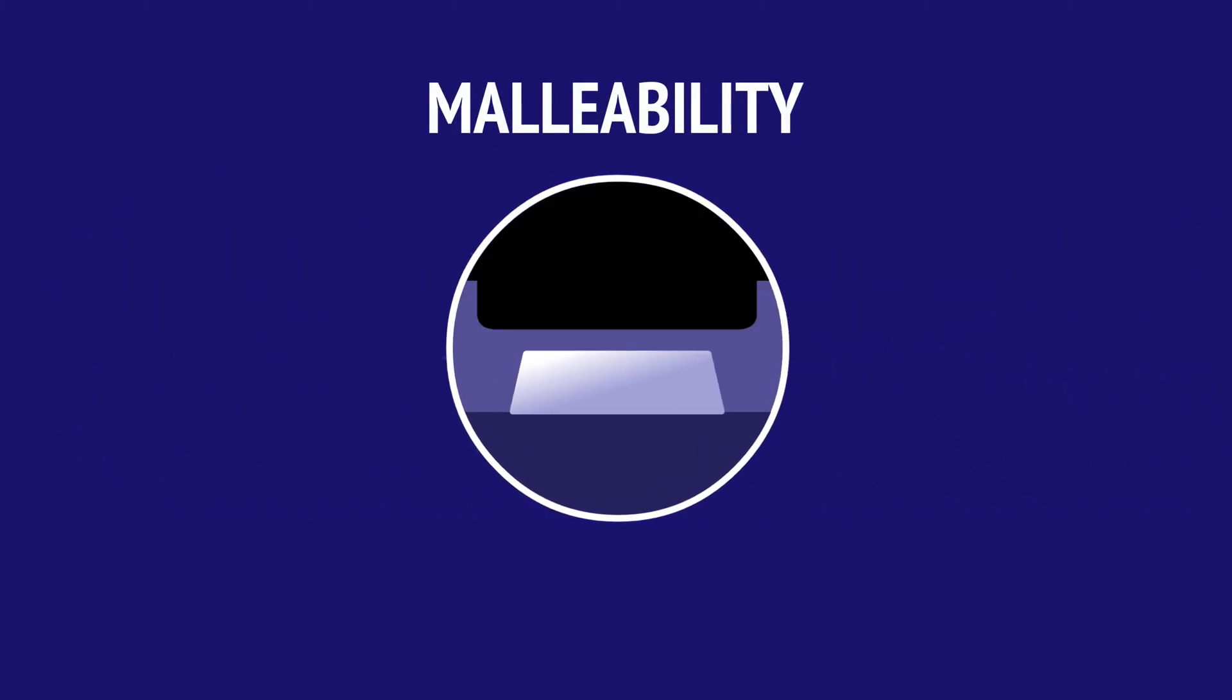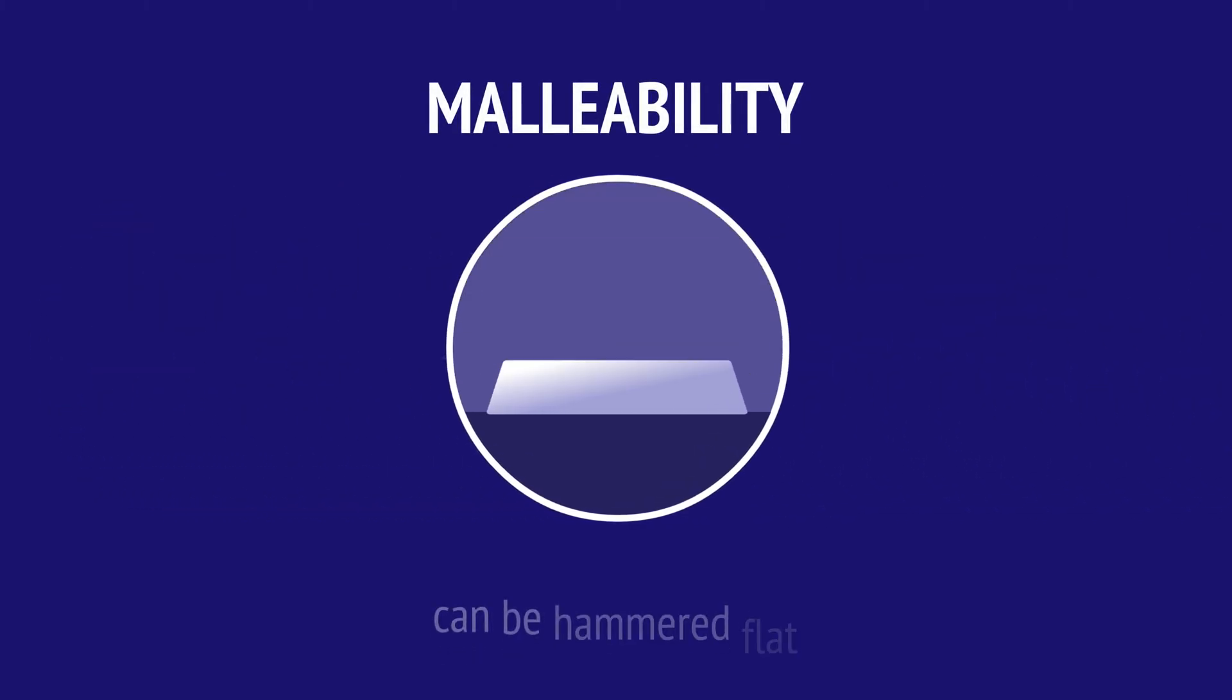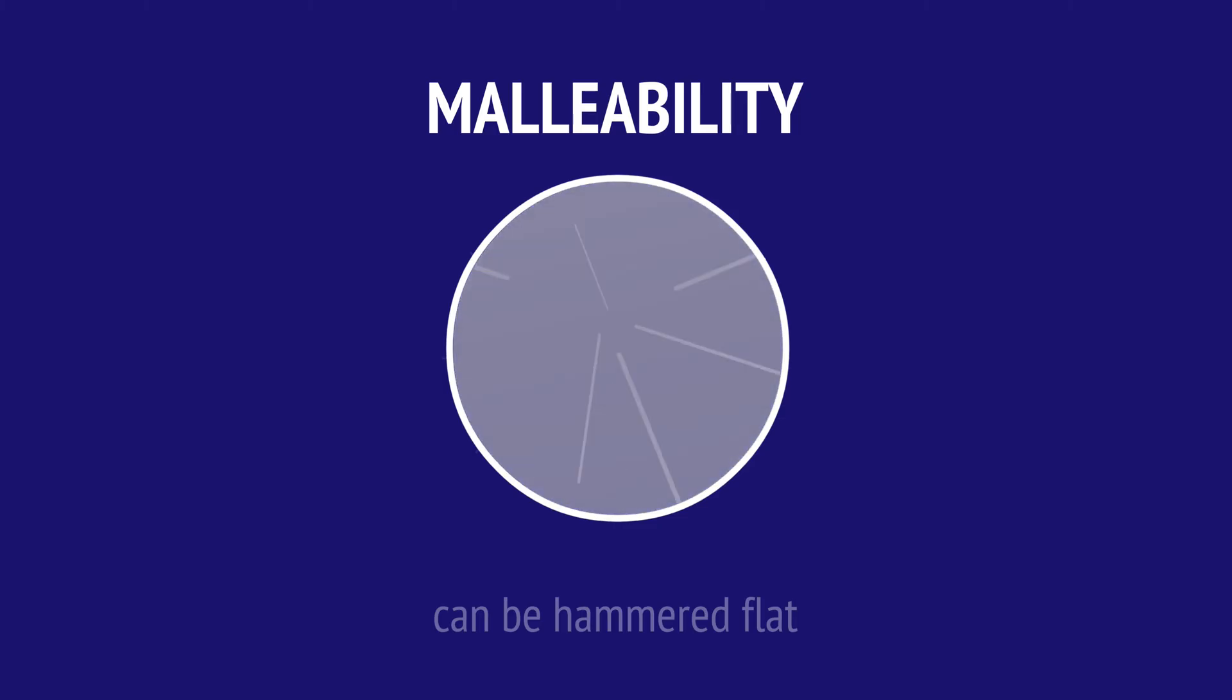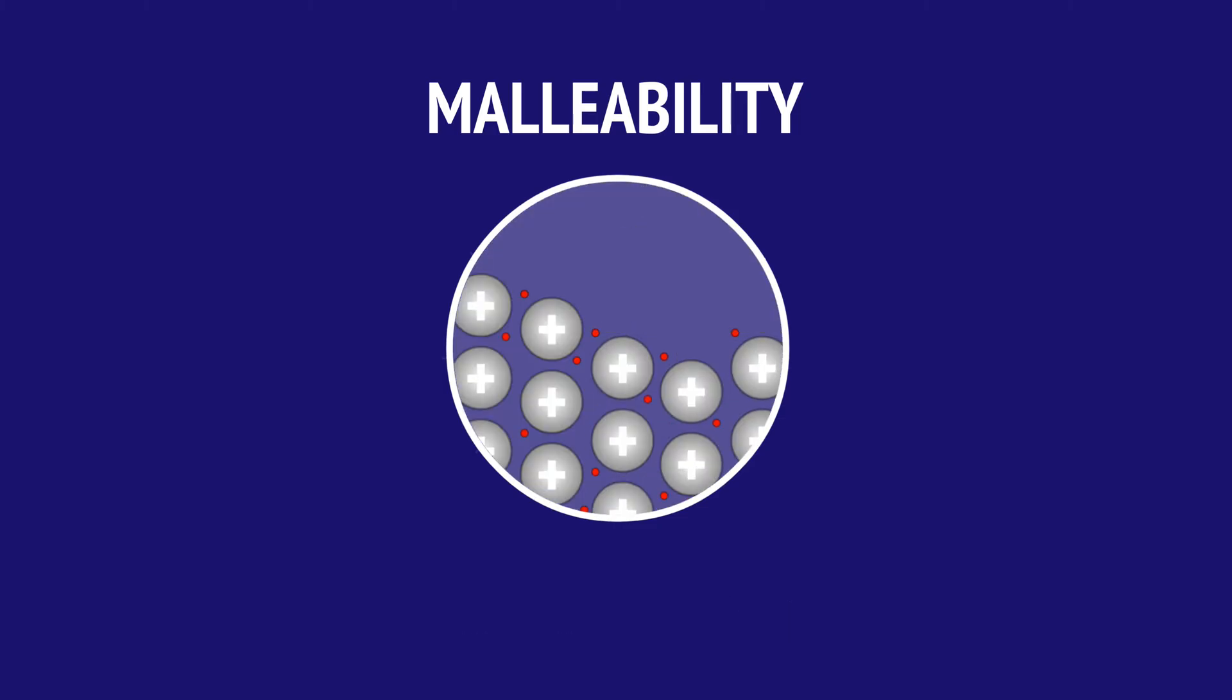Metals are malleable, meaning they can be shaped and hammered flat. That's because layers of atoms are able to slide past each other without breaking the metallic bonds.